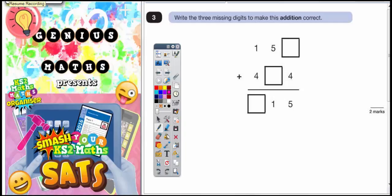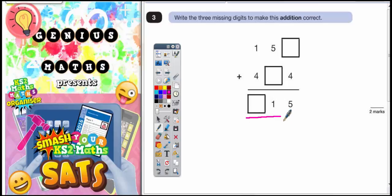Question 3. Write the 3 missing digits to make this addition correct. Now we've almost got to — we've got part of the answer already because the answer is actually down here. So what we've got to do is think: how do we get some of these parts of the answer?